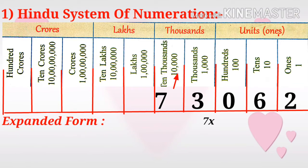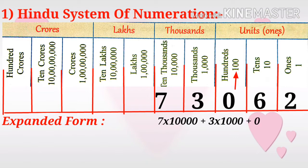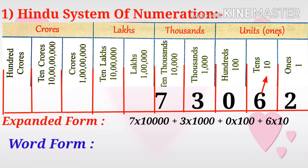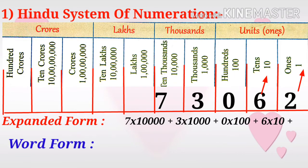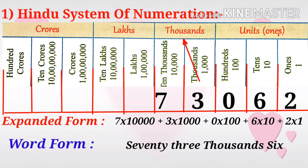First we write it in expanded form. 7 is in the ten thousands place, so 7 × 10,000. 3 is in the thousands place, so 3 × 1,000. 0 is in the hundreds place, so 0 × 100. 6 is in the tens place, so 6 × 10. And 2 is in the ones place, so 2 × 1.